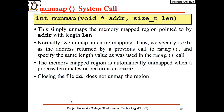munmap simply unmaps a memory-mapped region specified by ADDR and length len. We normally specify ADDR as the address returned by the previous mmap call and the same length value. Remember that a memory-mapped region is automatically unmapped when a process terminates or performs an exec, but closing the file descriptor does not unmap the region.